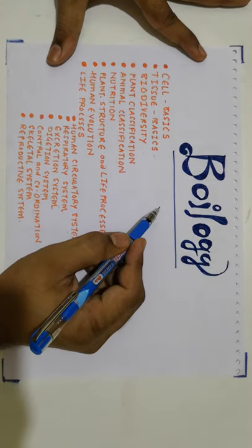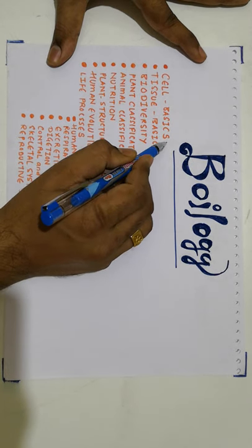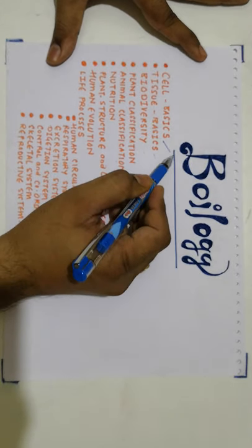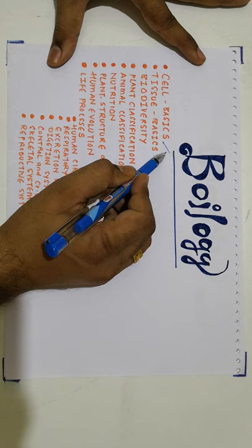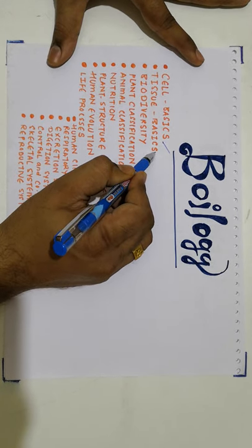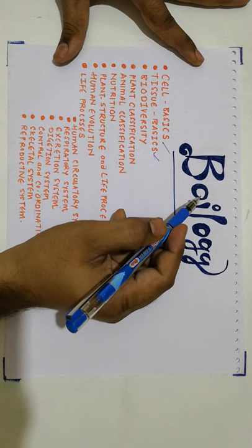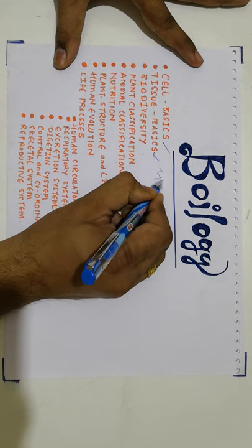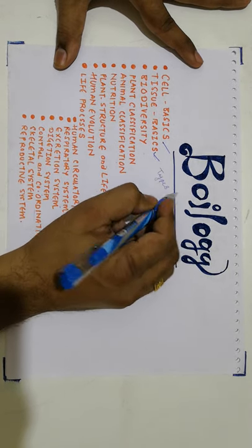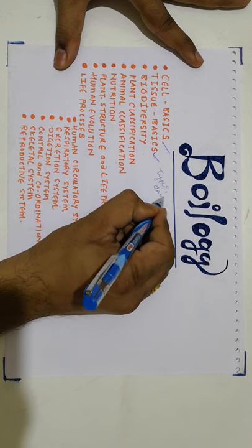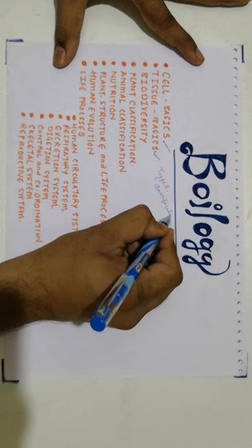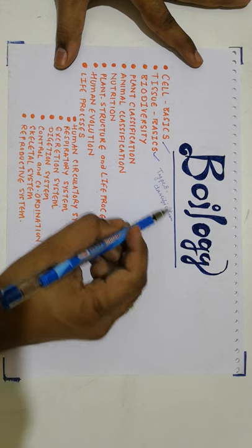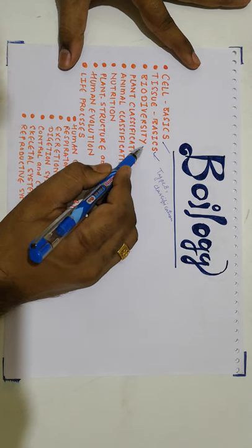Let me begin with the first topic in our video series — the study of cell. We are going to study the basics of cell followed by the basics of tissues. Here we are going to discuss their different types and also their classification, which is also very important. These first two chapters create the basic format to study Biology.